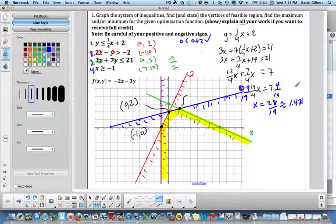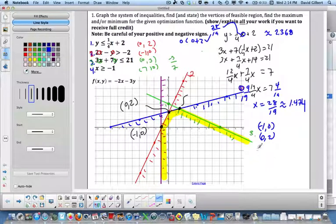Apparently, that's the edge of my tablet. To get the y I plug it into this. So, I plug in 28 over 19 in for x here and that gives me, solve that out and you get approximately 2.368. So, then my 3 coordinates are negative 1, 0, 0, 2 and 1.474 and 2.368.